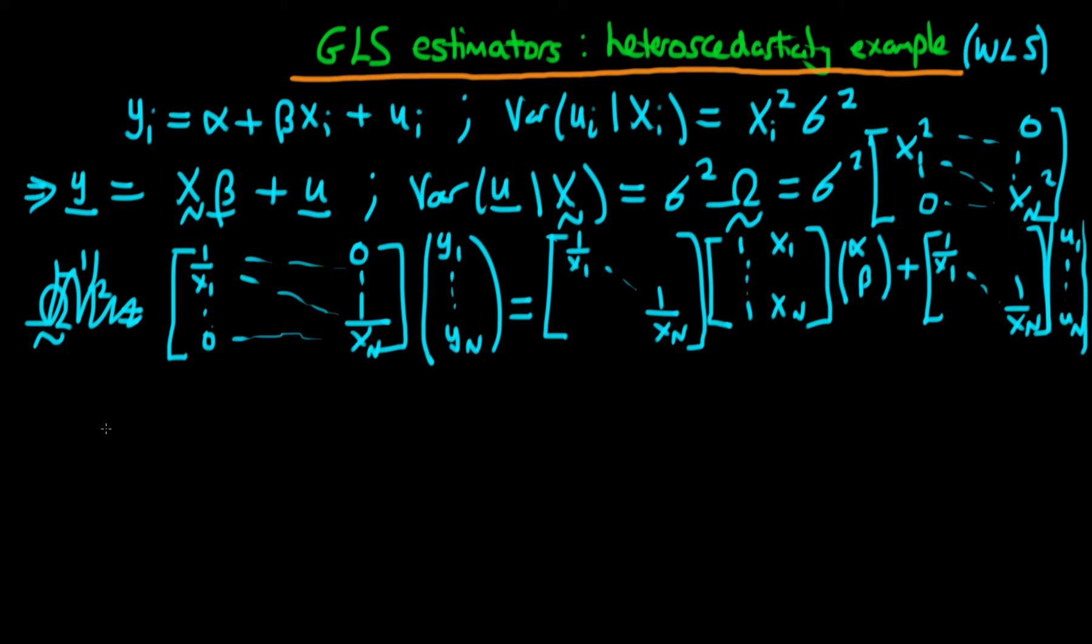So on the right-hand side, we're just going to get yi divided by xi, if we do the multiplication. And then on the right-hand side, our first term is actually just going to be alpha over xi, and then our second term is then going to be 1 over xi times xi times beta. So the xi's are actually going to cancel in this circumstance, so we're just going to be left with beta, and then we're going to have plus ui over xi.